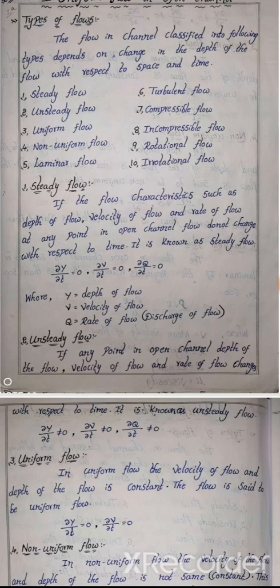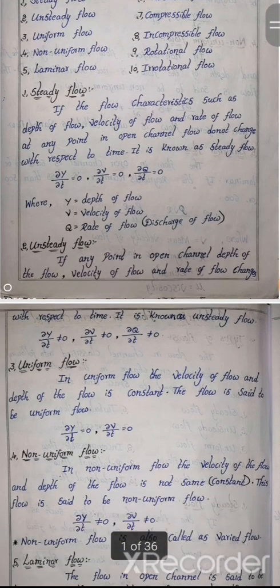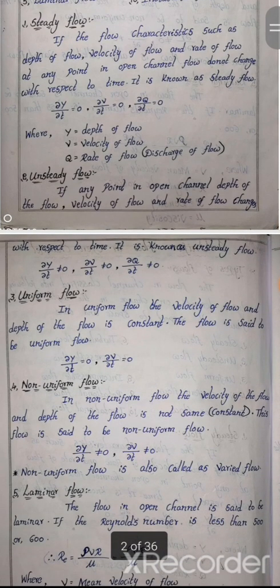In mathematical terms: q means rate of flow (discharge), y denotes depth of flow, and v denotes velocity of flow. In steady flow, these three characteristics do not change with respect to time — meaning ∂y/∂t = 0, ∂v/∂t = 0, and ∂q/∂t = 0.